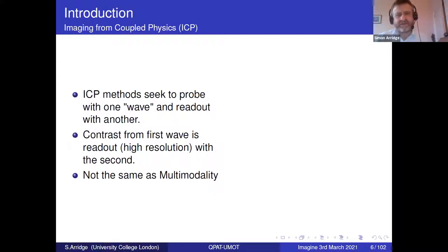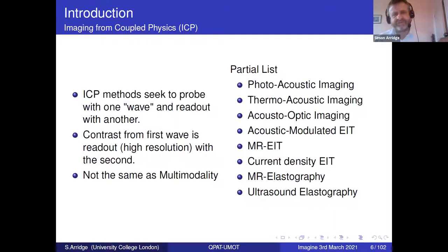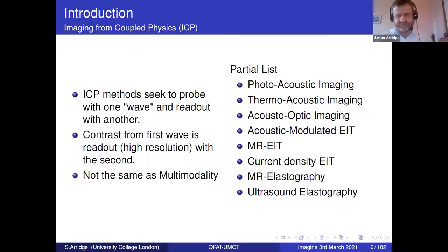What we can think of with coupled physics imaging is that it tries to combine the best of both worlds: we generate contrast from one mechanism but record the data using another. This is quite different from multimodality, which basically means having a number of images taken simultaneously — such as PET-CT or PET-MR — which is essentially data fusion where we obtain several images in the same reference frame and stack information at each pixel or voxel. Some ICP methods include photoacoustic imaging, thermoacoustic imaging — mathematically very similar but using microwave signal generation rather than photons — acousto-optic imaging, and others like MREIT, current density imaging, and various forms of elastography.